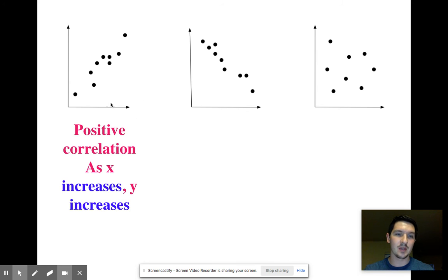Let's kind of look at some examples. This first one here is a positive correlation. As your x increases, your y increases, and it's going to the top left-hand side, so we know it's positive.